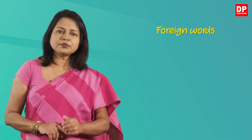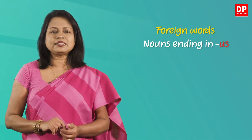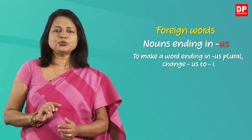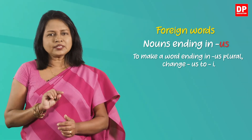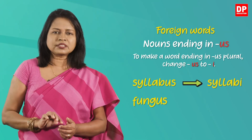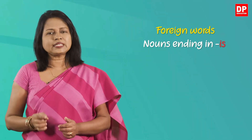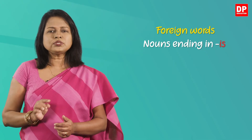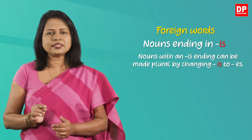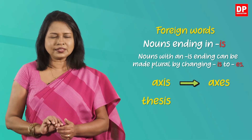The first type is nouns ending in -us. To make a word ending in -us plural, we change -us to -i. So syllabus becomes syllabi, and fungus becomes fungi. Next, let's see how the plural is formed in foreign words ending in -is. Nouns with an -is ending can be made plural by changing -is into -es. So axis becomes axes, and thesis becomes theses.